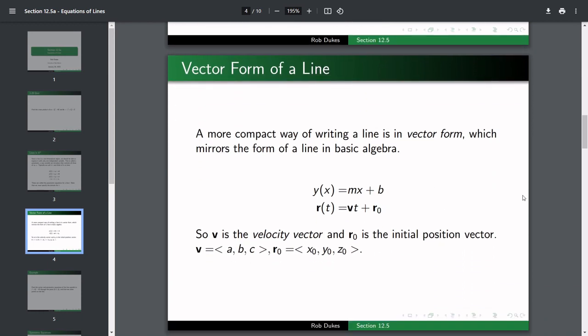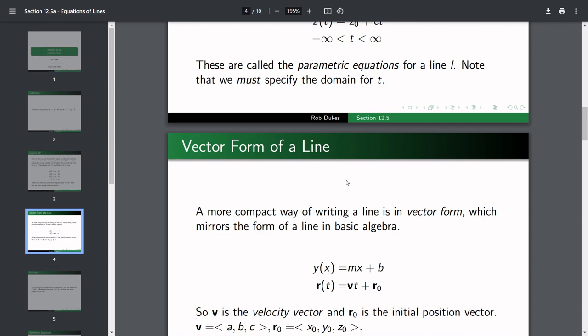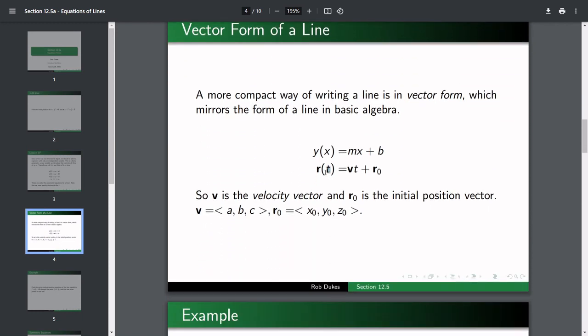Now, another way of writing this, the vector form, which is kind of modeled by Y equals MX plus B. Instead of Y, we have T as our input instead of X. We have R, bold-faced R, as our output. Whereas before we had X, Y, and Z as three separate equations, those are all scalars, but here we're combining them into a vector. Bold-faced V is the combined speeds ABC. And bold-faced R-naught is the combined X-naught, Y-naught, Z-naught. The way the point-slope form works is to say B is your starting point and M is your speed. Here, R-naught is your starting point and V is your speed.